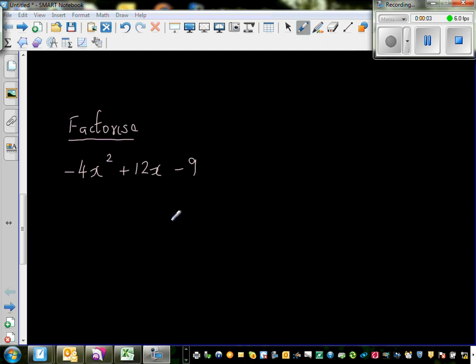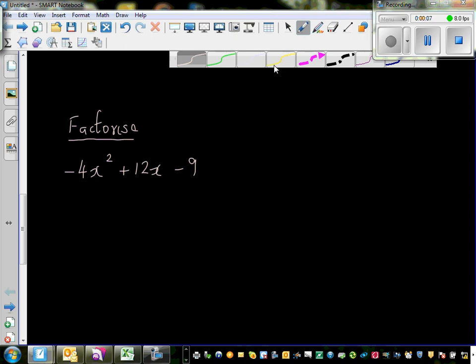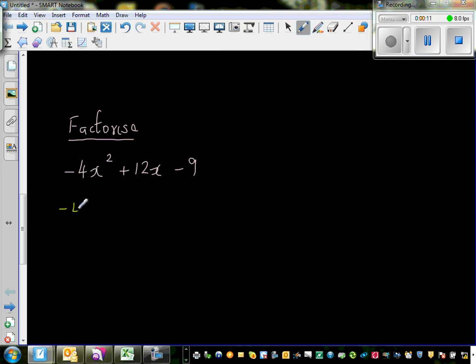Factorize -4x² + 12x - 9. I'm going to use the strategy of completing the square method. I'm going to factor out this -4, so if you factor out -4, you can write x². Whenever you're factoring out a negative number, the sign would change, so -4 times -3x.